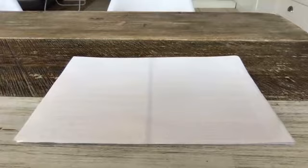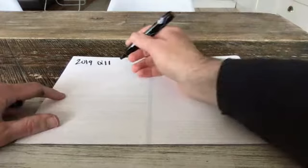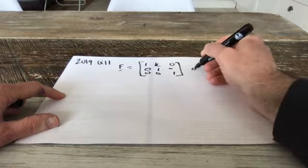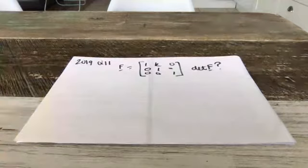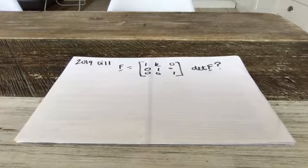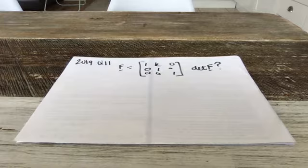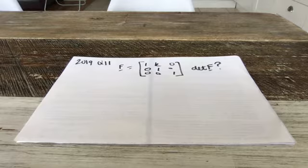So this is 2019 question 11. The question gave students a matrix F: [1, K, 0 / 0, 1, 0 / 0, 0, 1], and asked for the determinant of that. The determinant of F is a very important calculation in matrices and applied mathematics. It's particularly important for mechanical engineers because you use the determinant of a three-by-three matrix to calculate the moment of a force. And in electronics, when you start doing electromagnetism, you see this idea of the vector product, which is exactly the same as the determinant of a three-by-three matrix.